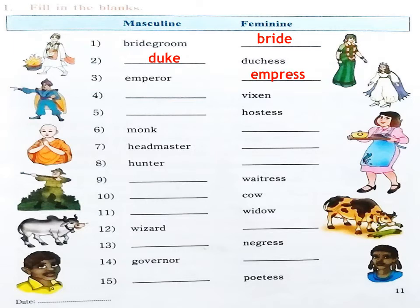The fourth one: can anyone tell me the masculine for Vixen? Very good. It is Fox. The fifth one: Hostess — Yes, Vivek. It is Host. Now children, the feminine form of Monk — Yes, Aidan Lobo. It is Nun. Very good.